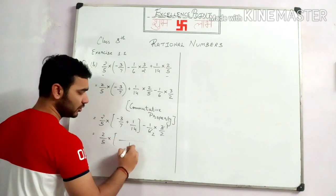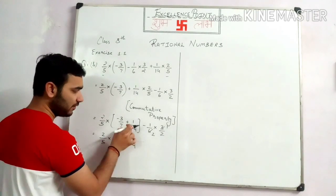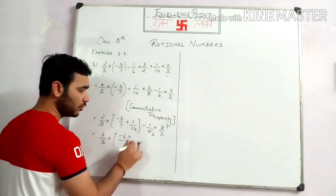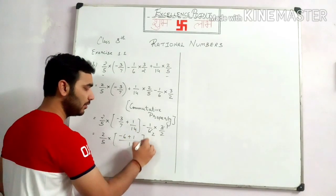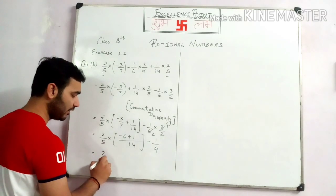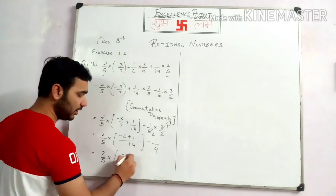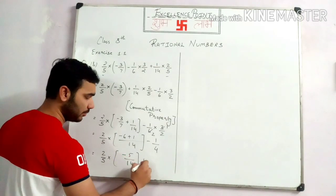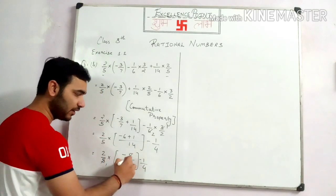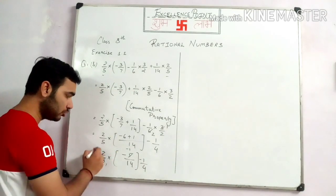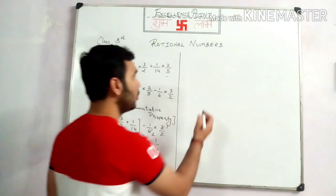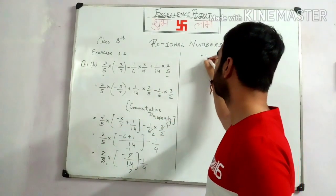What should be the LCM of 7 and 14? It will be 14. Now 14 divided by 7 will give you 2, and 2 multiplied by minus 3 will give you minus 6. Plus 14 divided by 14 will give you 1, and 1 multiplied by 1 will be 1. Now minus 1 into 1 will be 1, and 2 plus 1 will give us the bracket result. So 2 by 5 multiplied by minus 6 plus 1, which is minus 5 upon 14, minus 1 by 4. Cancelling, 5 ones are 5, giving minus 1 upon 7.